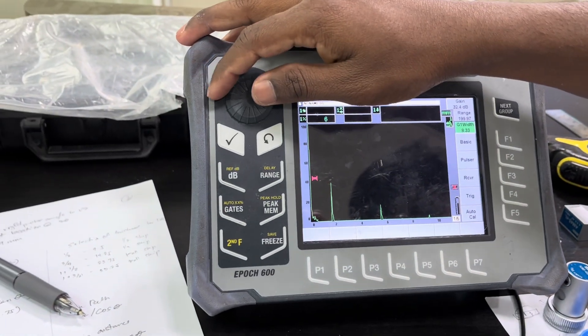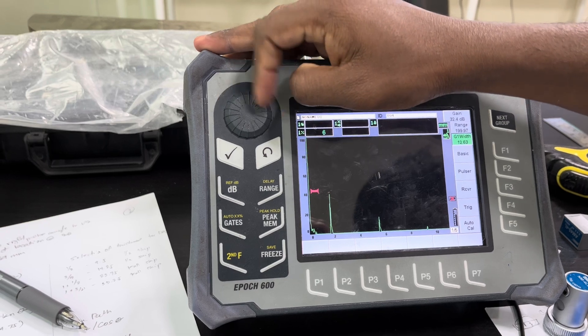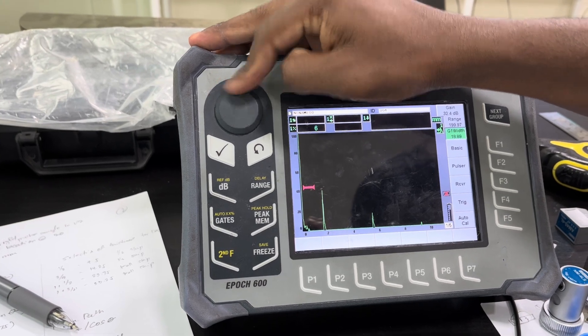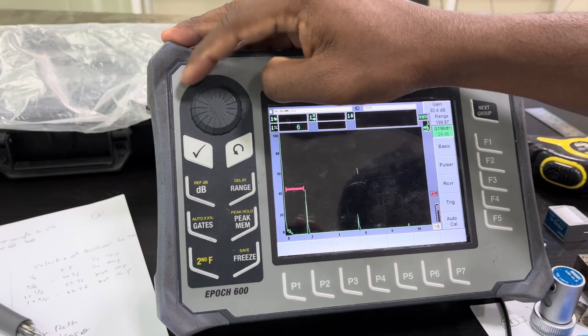When I place the probe towards the 25 radius, the first back wall echo is at 25, the second back wall echo is at 75, and the third back wall echo is at 175.